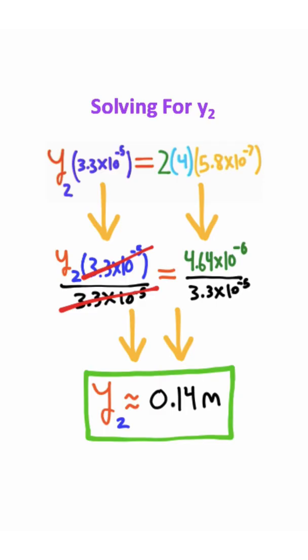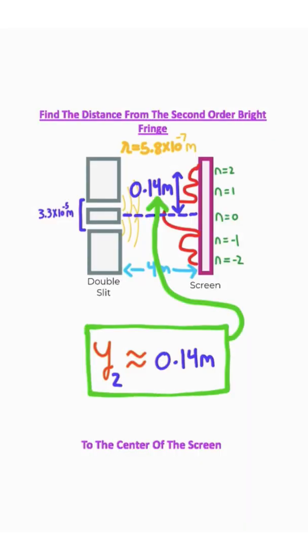And going through the algebra, you should end up with 0.14 meters, which is the distance from the second-order bright fringe to the middle of the screen.